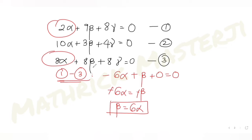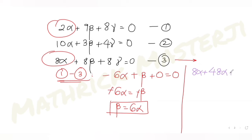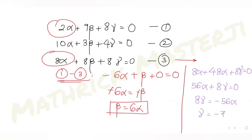Now I have β = 6α. Substituting that into equation 3: 8α + 8(6α) + 8γ = 0, which gives 8α + 48α + 8γ = 0, so 56α + 8γ = 0. Therefore 8γ = -56α, giving γ = -7α.